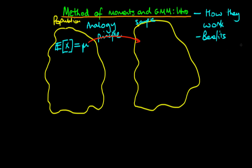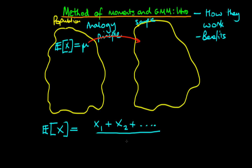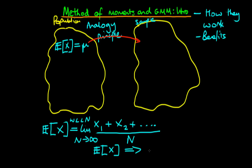How do we come up with a sample equivalent of this population moment condition? Well, the expectations operator — the expected value of x — is really the equivalent of taking an infinite sample of observations, x1, x2, continuing on forever, and taking the average. In the limit as n goes to infinity, we know this is the case because the weak law of large numbers tells us there is this equivalence. So we replace the expectation of x by a sample equivalent, which is just the sample mean: 1 over n times the sum from i equals 1 to n of xi.